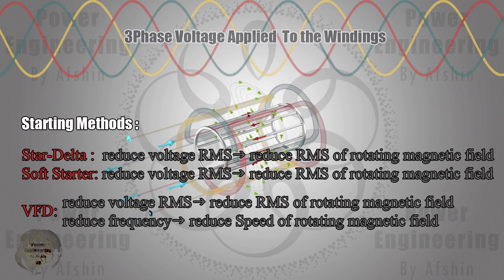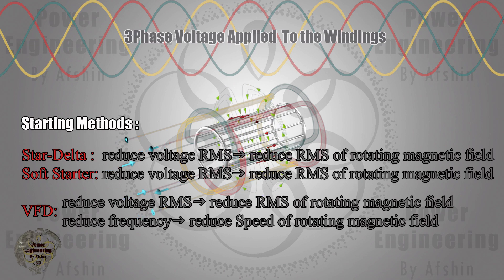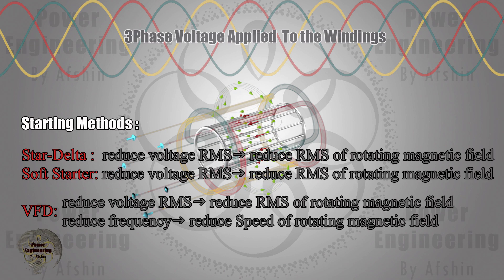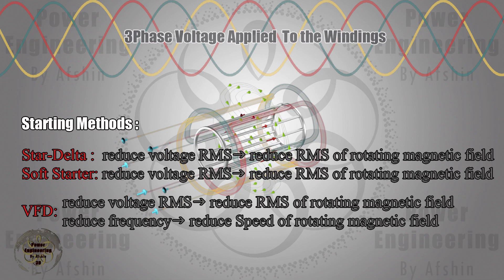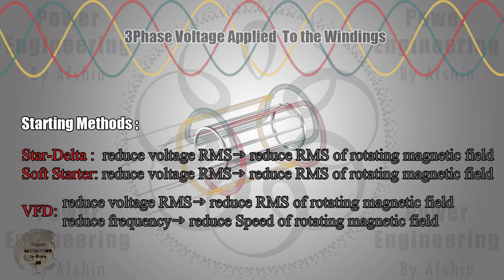In star delta and soft starter methods, reducing the input voltage reduces the starting flux, though the source frequency remains unchanged. The VFD method allows control over both input voltage and frequency, reducing both parameters during startup according to the VFD's control mode. Of course, using these starting methods requires studying the motor's mechanical load.